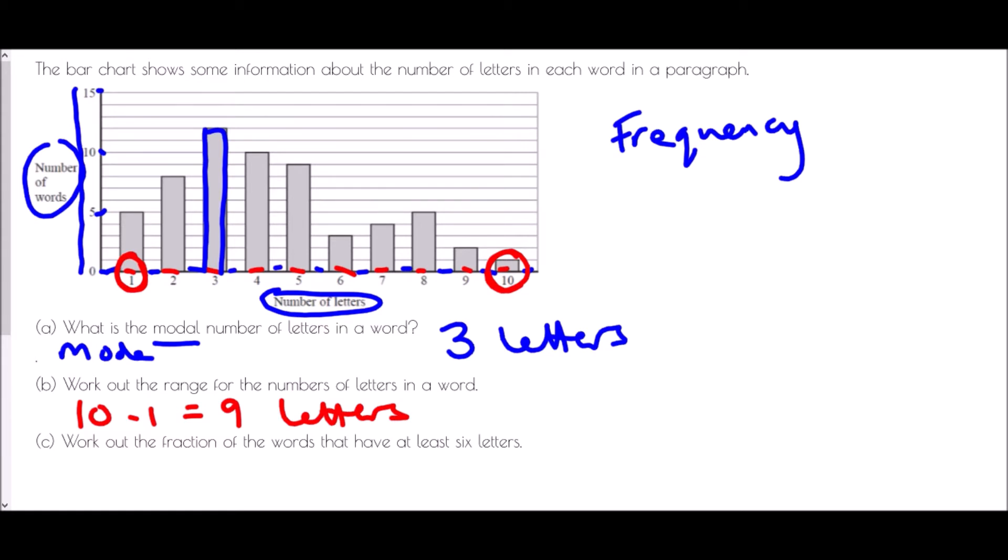It also asks us to work out the fraction of the words that have at least six letters. Now if we're going to do that what we're going to need to know is how many have at least six letters. So what we need to do here is read the actual height of the bars. So for six letters there are three words. For seven letters there are four words. For eight letters there are five words. For nine letters there are two words. And for ten letters there is one. And so the number of words which have at least six letters would be three plus four plus five plus two plus one. So seven, 12, 14, 15 letters.